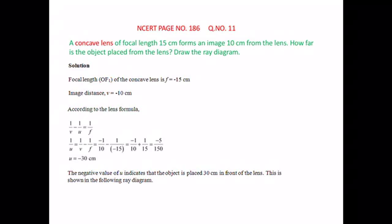While solving all questions, you have to take care of sign conventions. The negative value of u indicates the object is placed 30 centimeter in front of the lens. This is shown in the diagram because the question asks to draw the diagram also.